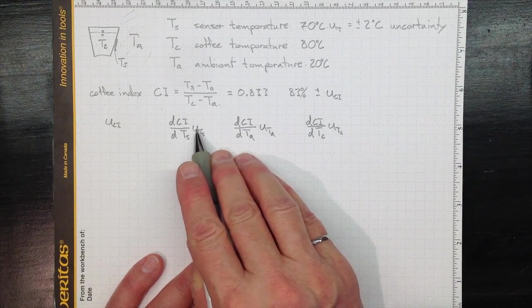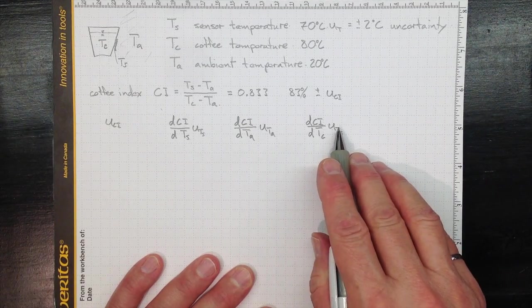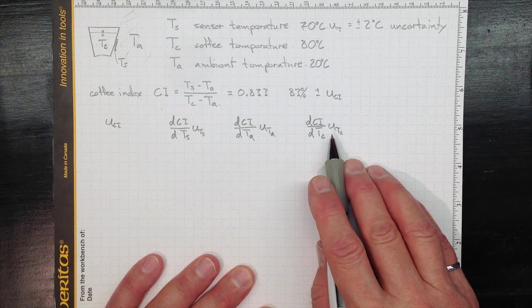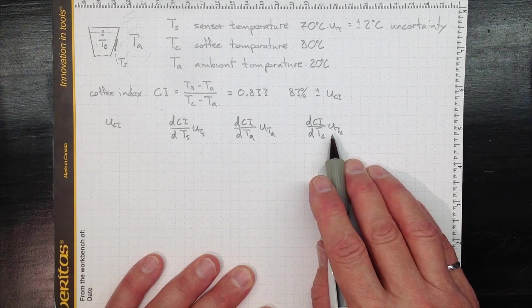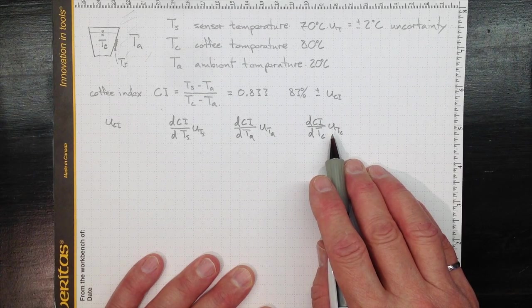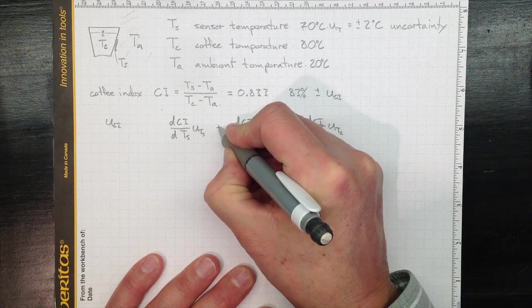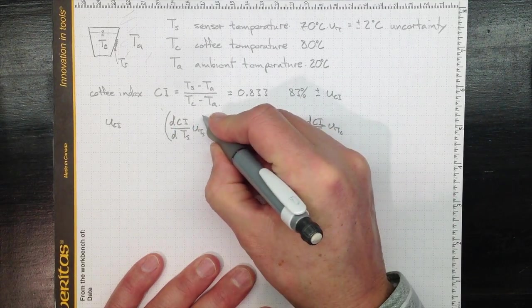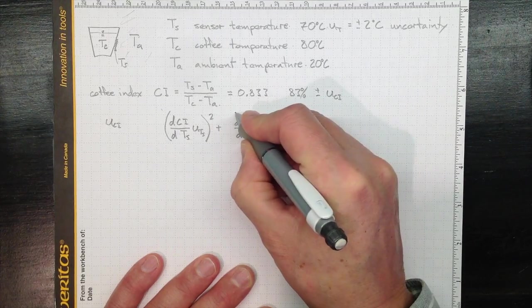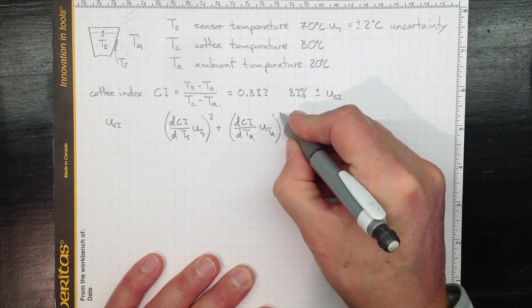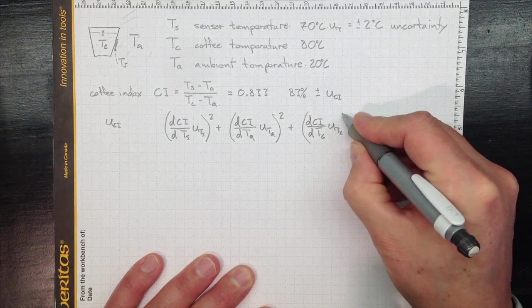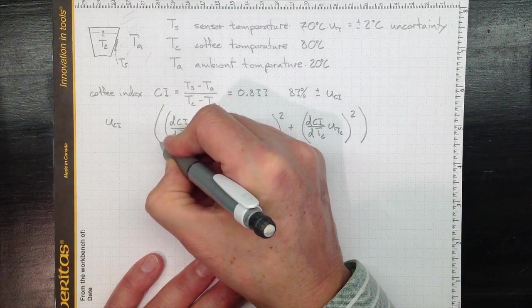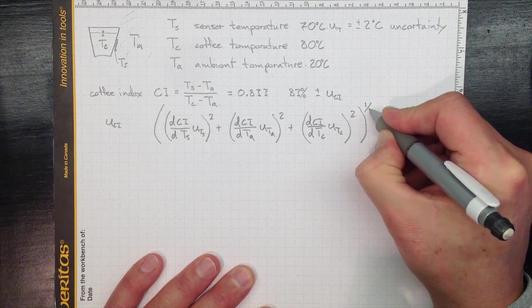Now, because these uncertainties may be independent, then they won't all be acting all in the same direction, all at the same time, at least we hope. So when we add these up, we square them and then take the square root for the overall uncertainty.